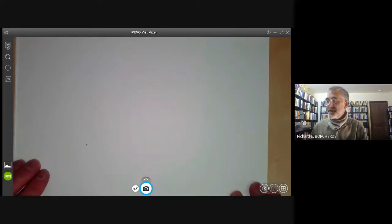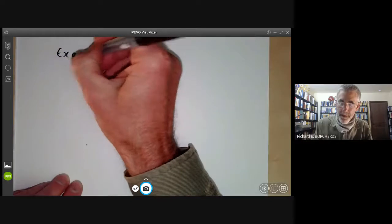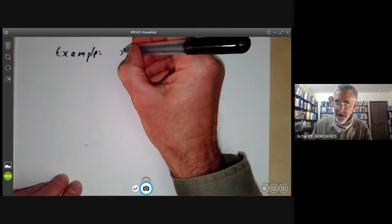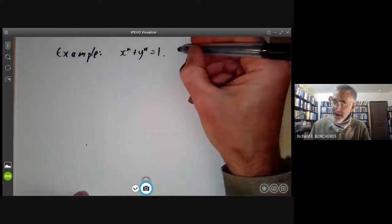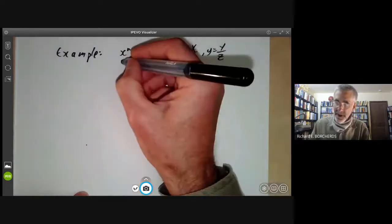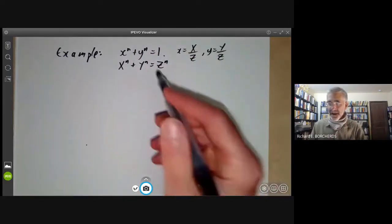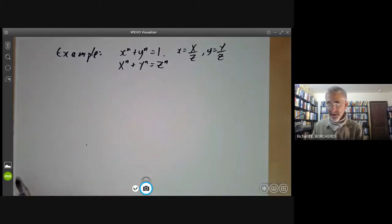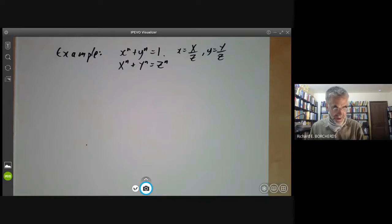Finding points on curves or rational points on curves can be very difficult. For example, suppose we try to find all rational points on the curve x to the n plus y to the n equals 1. Well, if x is equal to x over z and y is equal to y over z, for some integers x, y, z, we just have to solve x to the n plus y to the n equals z to the n and ask whether this has any solutions other than the obvious solutions where x or y is zero. Well, this is, of course, Fermat's last theorem, now proved by Andrew Wiles, and it took several centuries of effort to prove it. So even a simple looking equation like this can be really hard to find the rational points on.